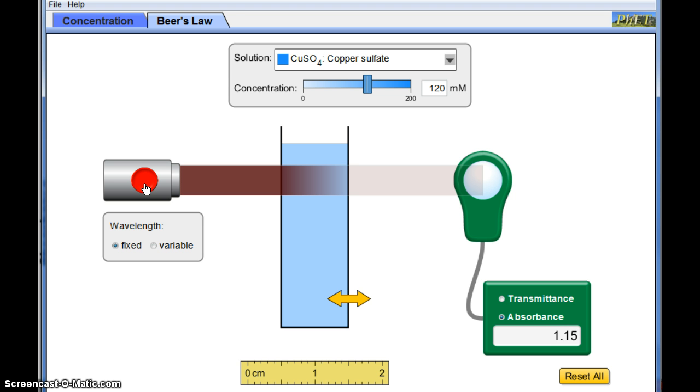The distance that the light travels through the solution will affect my absorbance. If my cuvette was way bigger, you can see down here in the right that the absorbance is going up. As the cuvette gets smaller, the absorbance goes down.